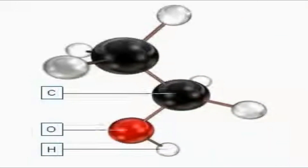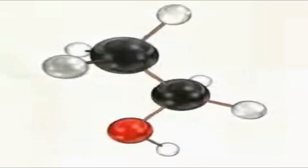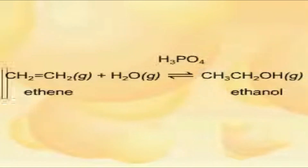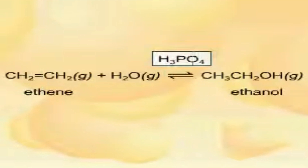Ethanol can also be obtained using the general methods for preparation of monohydric alcohols. On an industrial scale, ethanol is produced by the reaction between ethene and steam, occurring at 270 degrees Celsius in the presence of phosphoric acid as a catalyst.